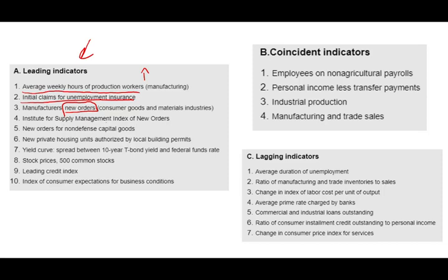The Institute of Supply Management Index of New Orders is another indicator — above 50 is good, below 50 is not good. New orders of non-defense capital goods — again, we're looking at new orders specifically. New private housing units authorized by local permits: permits are like orders because before you construct a house you need a permit, and it may take a month or two before actual construction starts. If construction companies are getting more permits, this is a good sign for the economy, because new homeowners will buy furniture, TVs, electronics, kitchen supplies, and so forth.